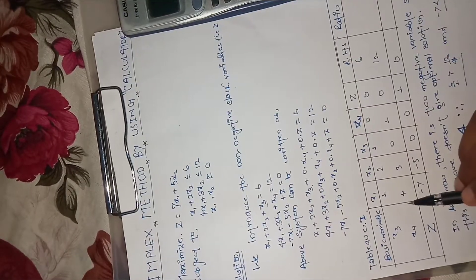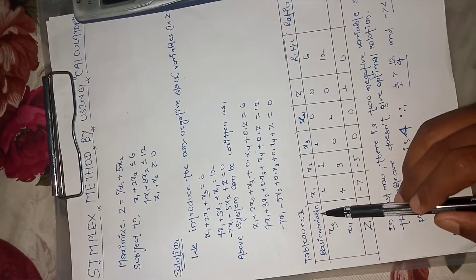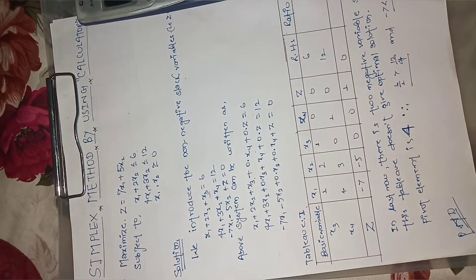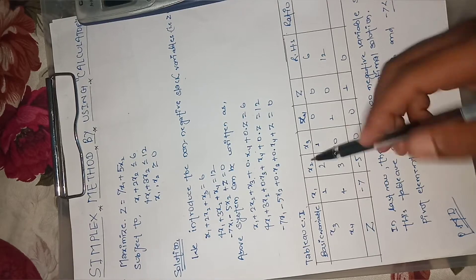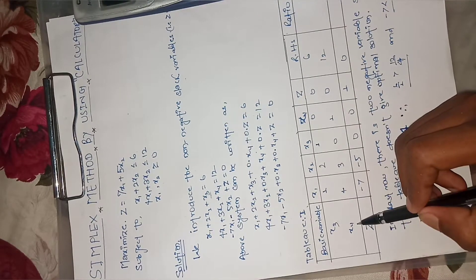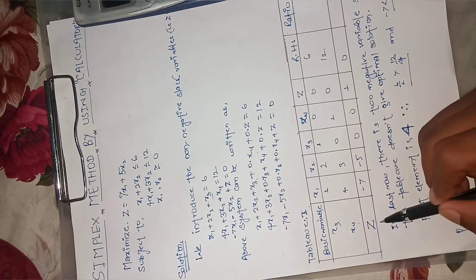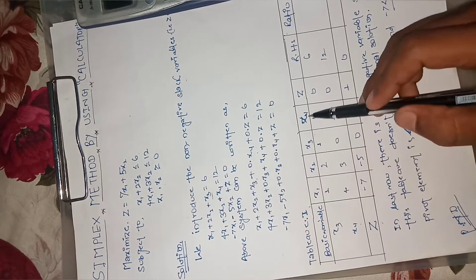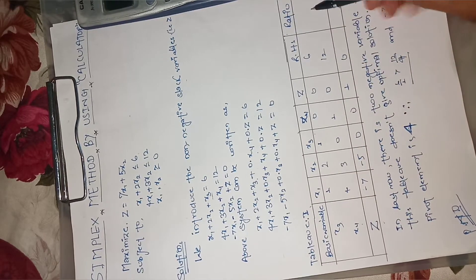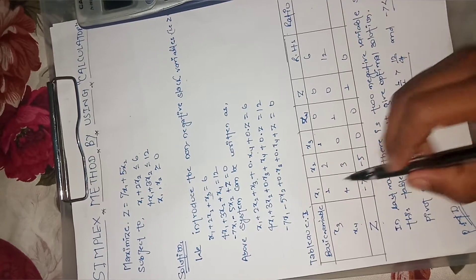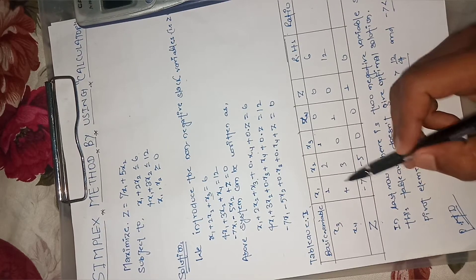In the base, we will select the variable. My default is to select the entering variable among x1 to x3, x4. We compute the ratio test to determine the leaving variable.